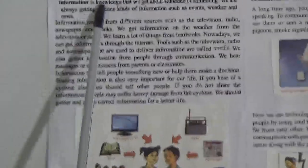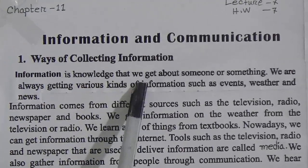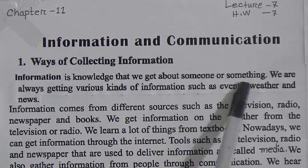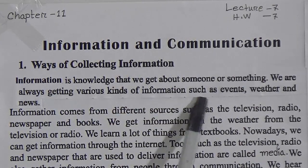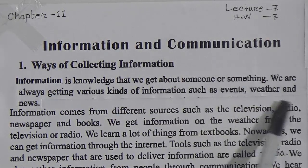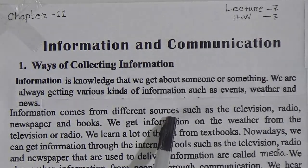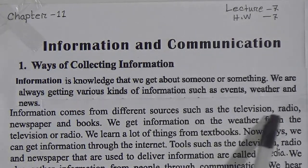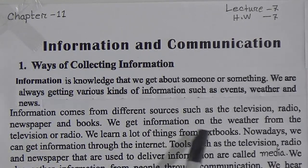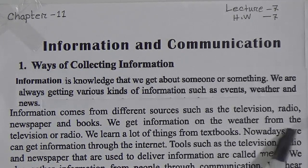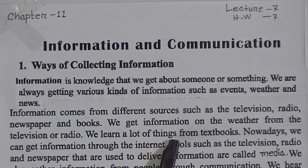Ways of Collecting Information. Information is knowledge that we get about someone or something. We are always getting various information such as events, weather, and news. Information comes from different sources such as the television, radio, newspaper, and books. We get information on the weather from the television or radio.